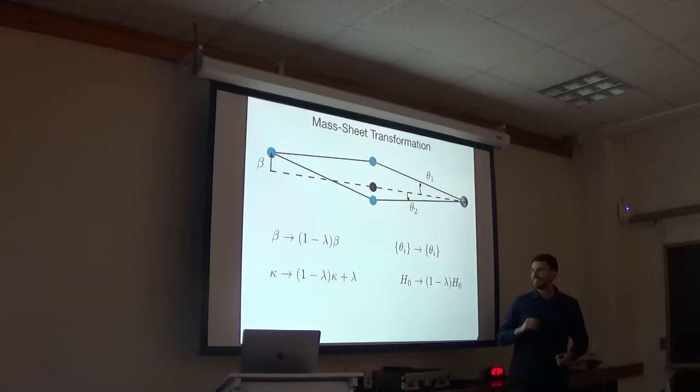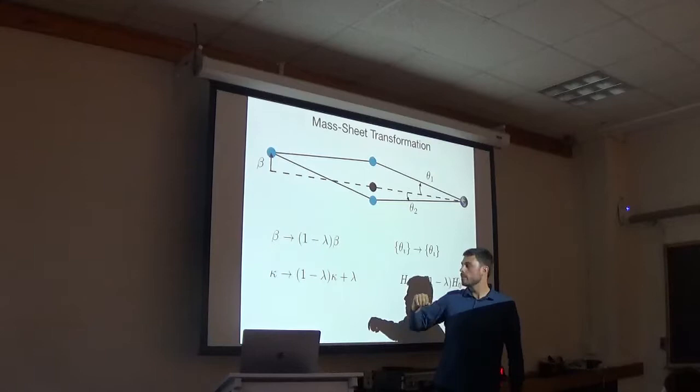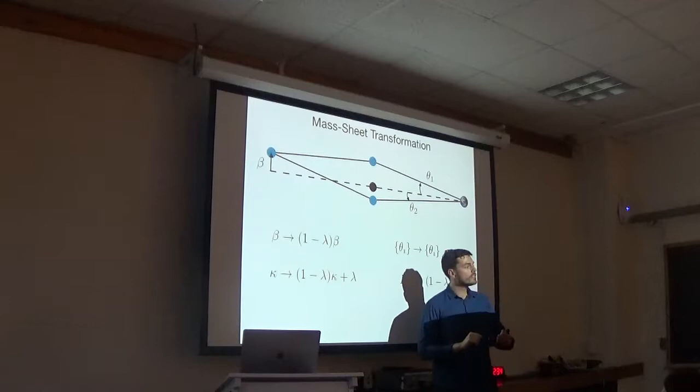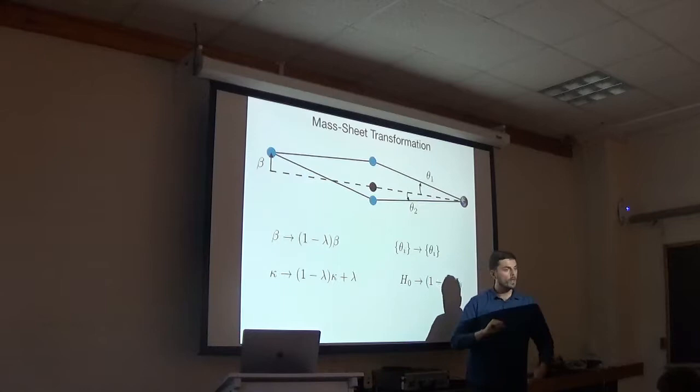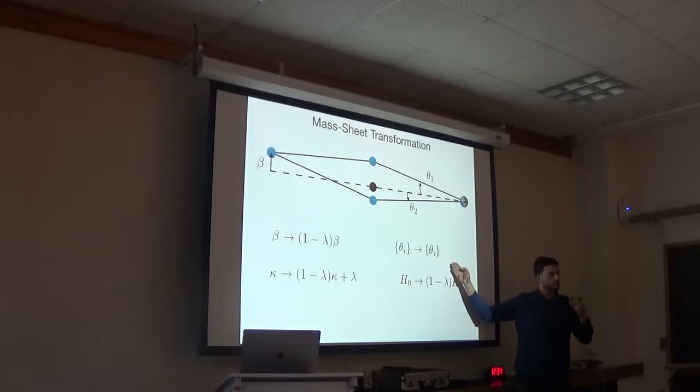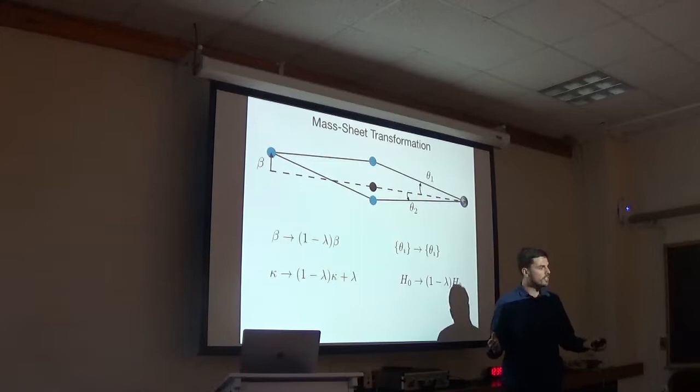So let me briefly tell you about this mass sheet degeneracy. At first I told you that if you measured theta 1 and theta 2, you would know everything about the lens. But I lied. In reality, you can rescale the impact parameter which is invisible. If you also rescale your lens model with this lambda and add a constant, it's equivalent of taking some mass away from your lens, putting it in a constant sheet, then your images will not change positions. So these are unobservable to the images. But the time delay changes, and thus your H0 measurement changes.